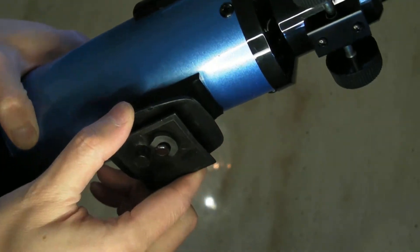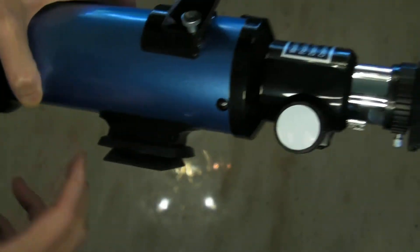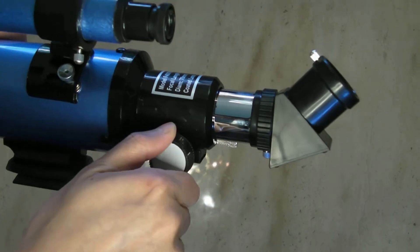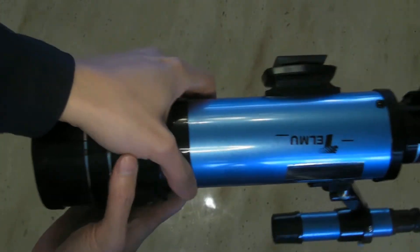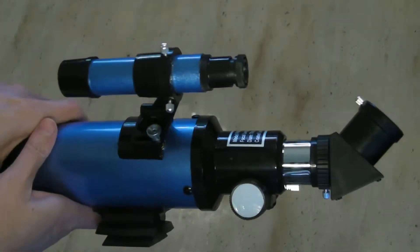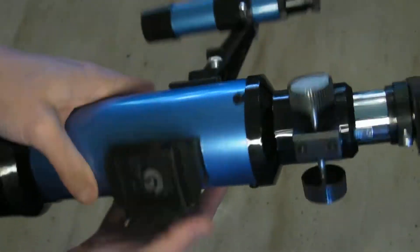And this is the mount for the tripod. And this is to focus the scope itself. So it's a pretty simple unit. And it feels quite sturdy.